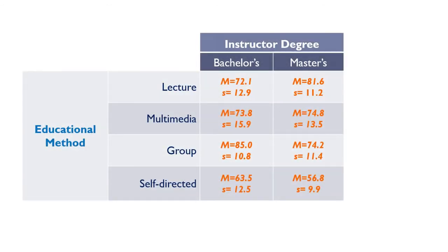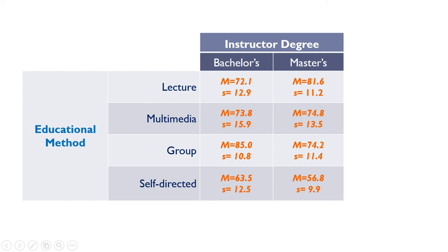The most common thing to do is write the means and sometimes the standard deviations in each cell. We don't really need the standard deviations much because we can see they're pretty similar — as low as about 9.9 and as high as 16. That's not bad; there's not going to be a violation of the equal variances condition. Those standard deviations are not that different from each other, and it takes quite a lot for them to be too different. I used a big M for sample mean.